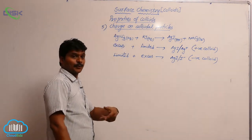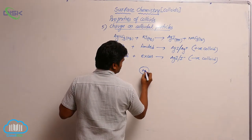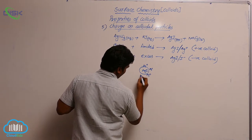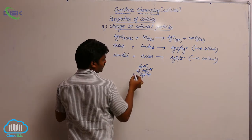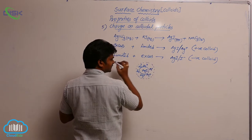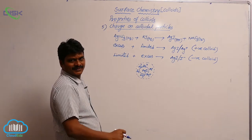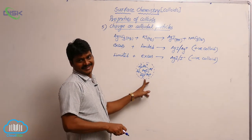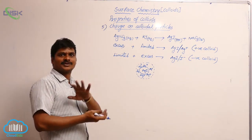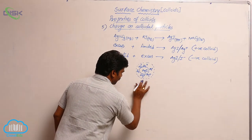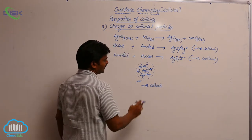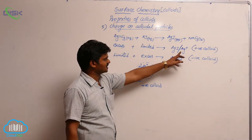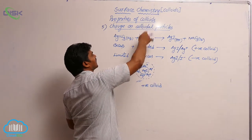Imagining the colloidal particle as spherical: in a positive colloid, silver ions are adsorbed around it forming the first layer — called the fixed layer. The charge on this fixed layer determines whether the colloid is positive or negative. A positive colloid is represented as AgI/Ag⁺. In the second case, when potassium iodide is in excess, iodide ions are adsorbed as the fixed layer on the silver iodide colloidal particle.